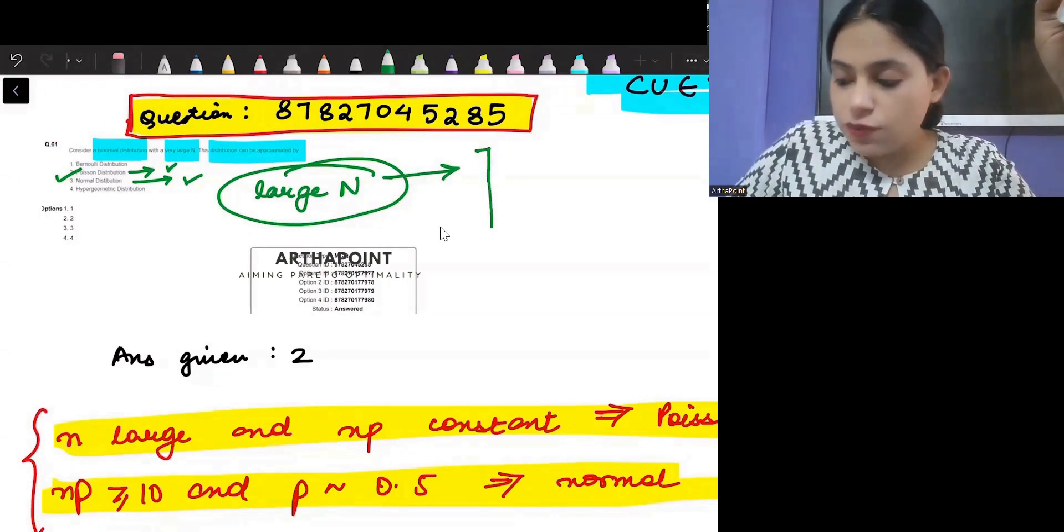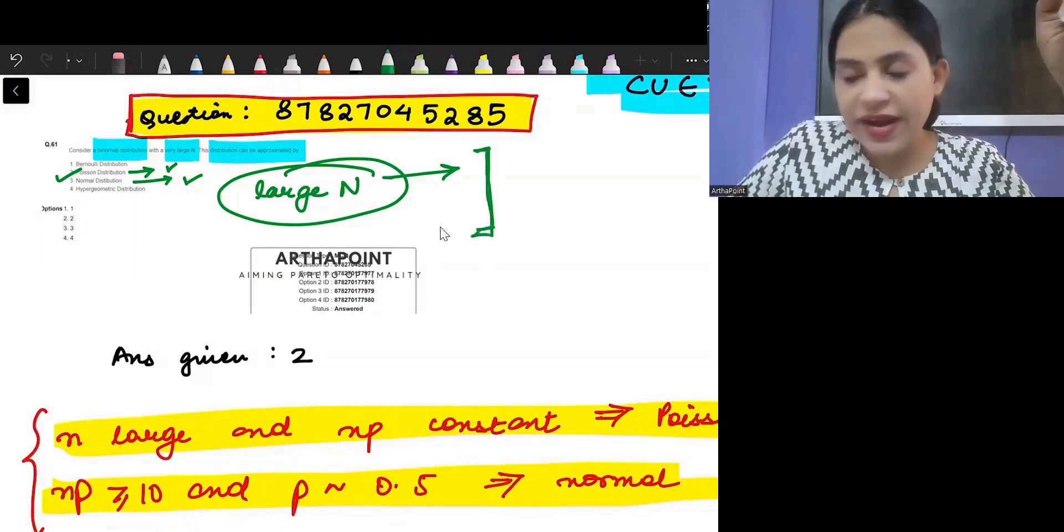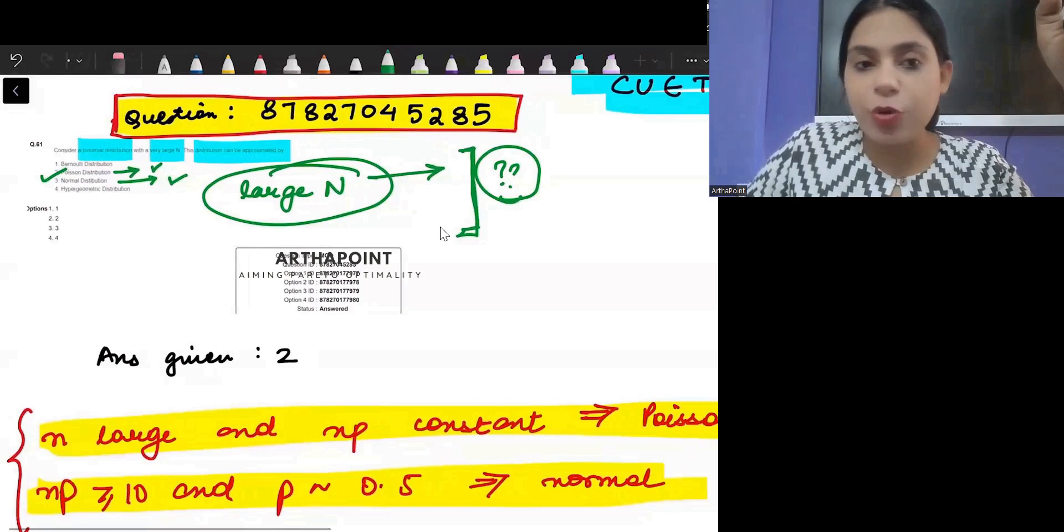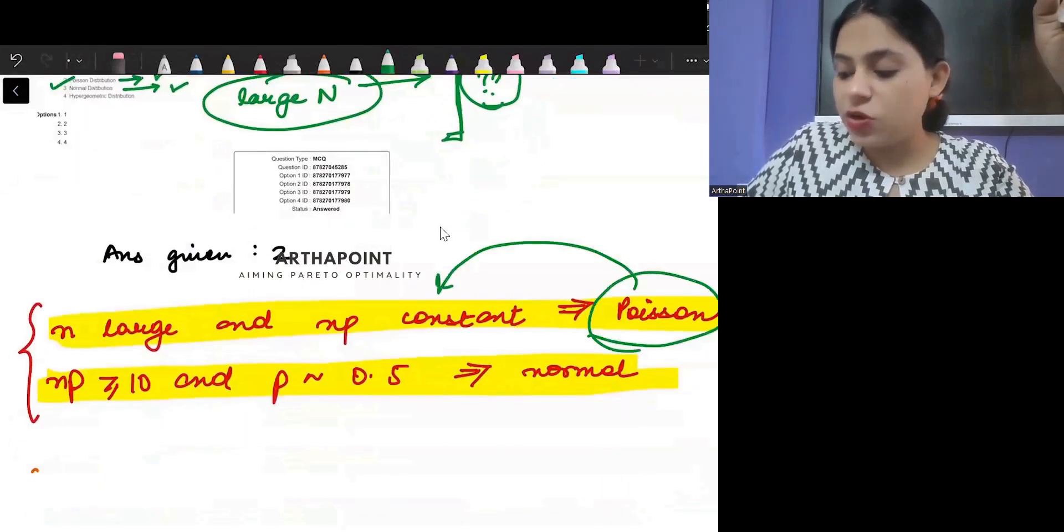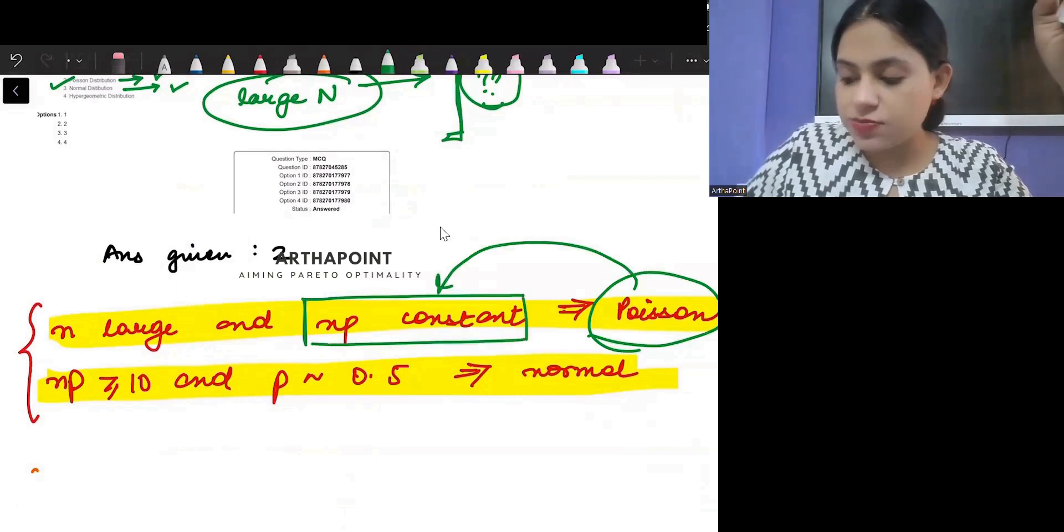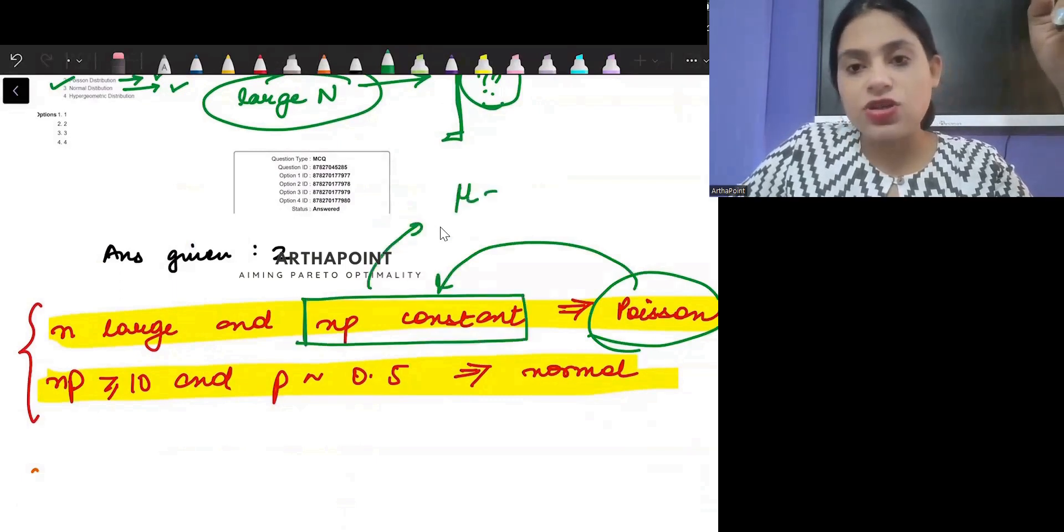So we need to know further information to act on this. Just for example, it becomes a Poisson distribution when your NP is constant, when we have constant mean.